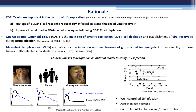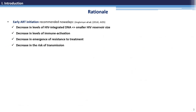To overcome this inconvenience, it offers great help to use animal models of SIV infection like the Chinese rhesus macaque. The dynamics of SIV infection and CD4 T cell depletion in these animals are very similar to HIV infection in humans. In addition, nowadays it is recommended by physicians to start ART as soon as HIV infection is diagnosed,